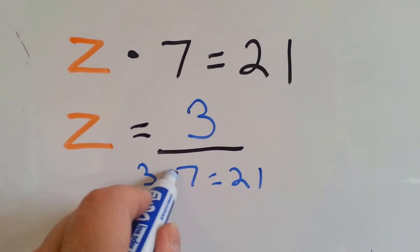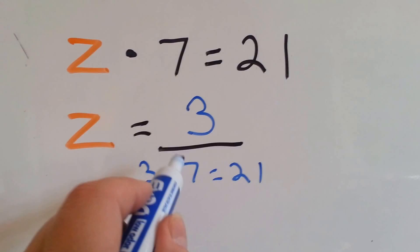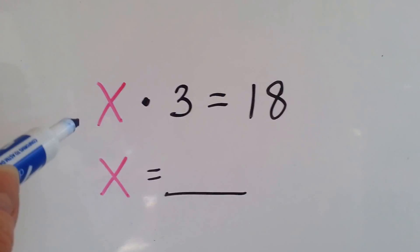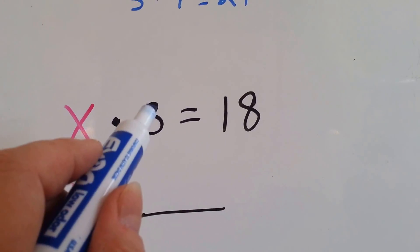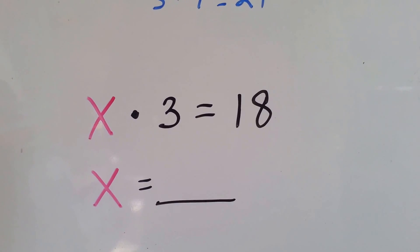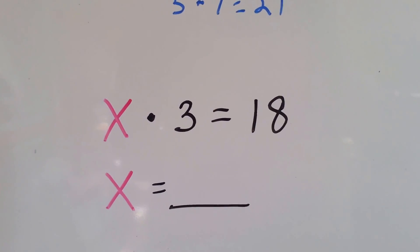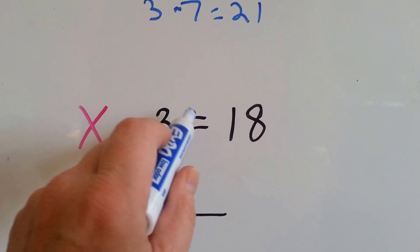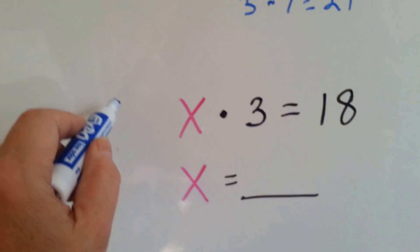And that dot comes in handy because we don't want to put an x there because that could be a variable. That could be another number like right here. x times 3 equals 18. Learn your 3 times table. Something times 3 equals 18. Let's count by 3's.